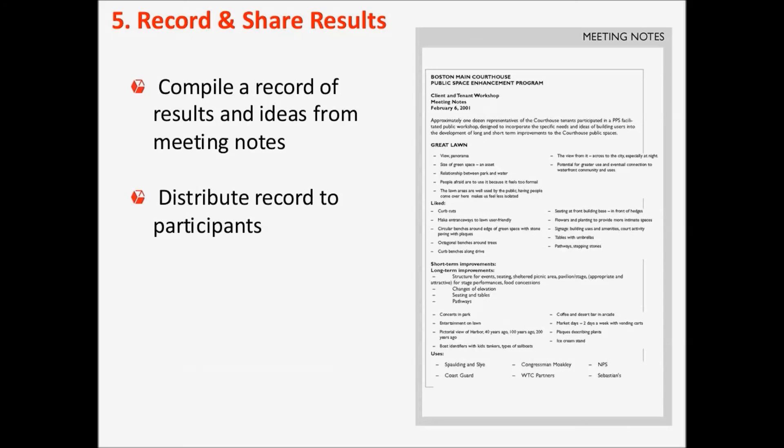The next step is to record and share the results of the session. We recommend using the flip charts to compile a record of the results and ideas, typing them up, collecting them in a simple way, and sharing them with all the participants. Distributing the record to participants is important because in a way this record is also their commitment to the event. It's a great starting point for discussing what is feasible, what is realistic, what you have resources for, and what other organizations may be able to help with. Sharing the results is a very important step of the brainstorming process.